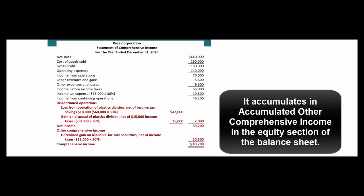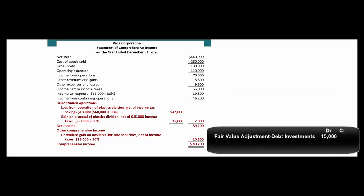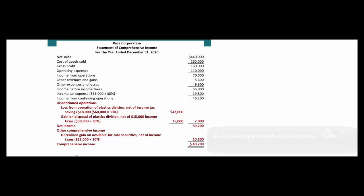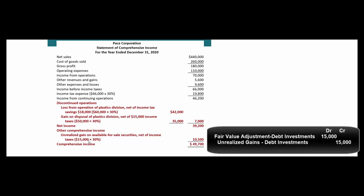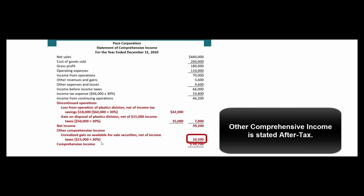For example, these are unrealized gains on available-for-sale securities. So we held some bonds, they went up in value, and we didn't sell them. But the fact that they went up in value was important, so we marked them up on our balance sheet and booked $15,000 of unrealized gains. We took off income taxes of 30%, so after tax we had an unrealized gain of $10,500.